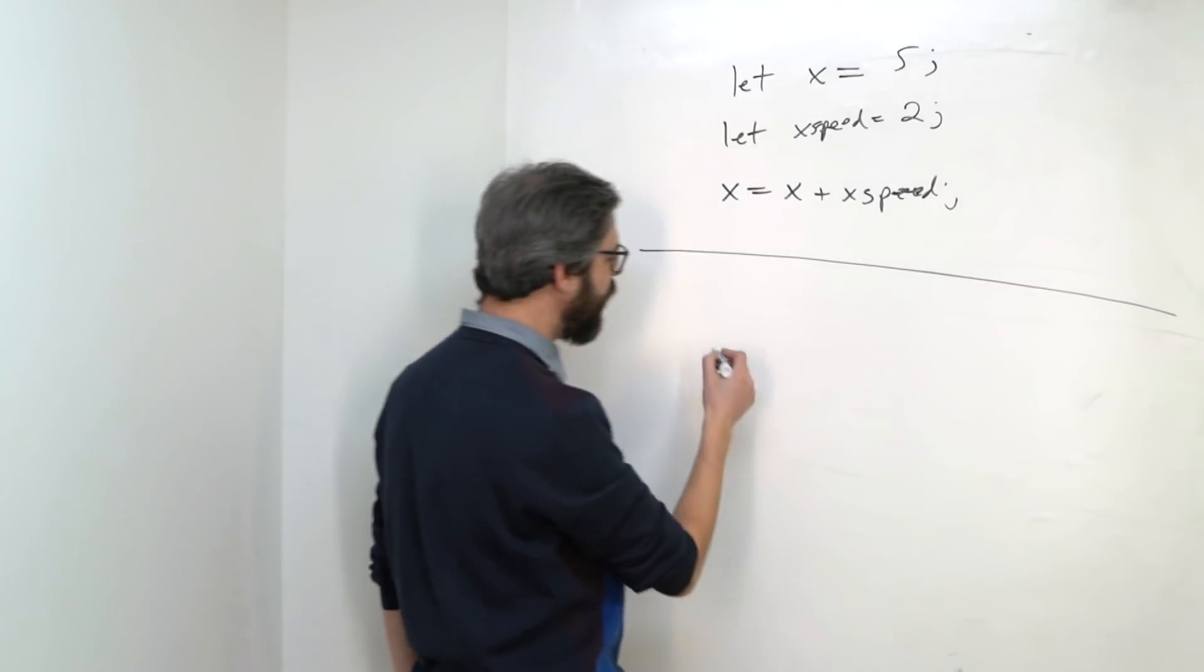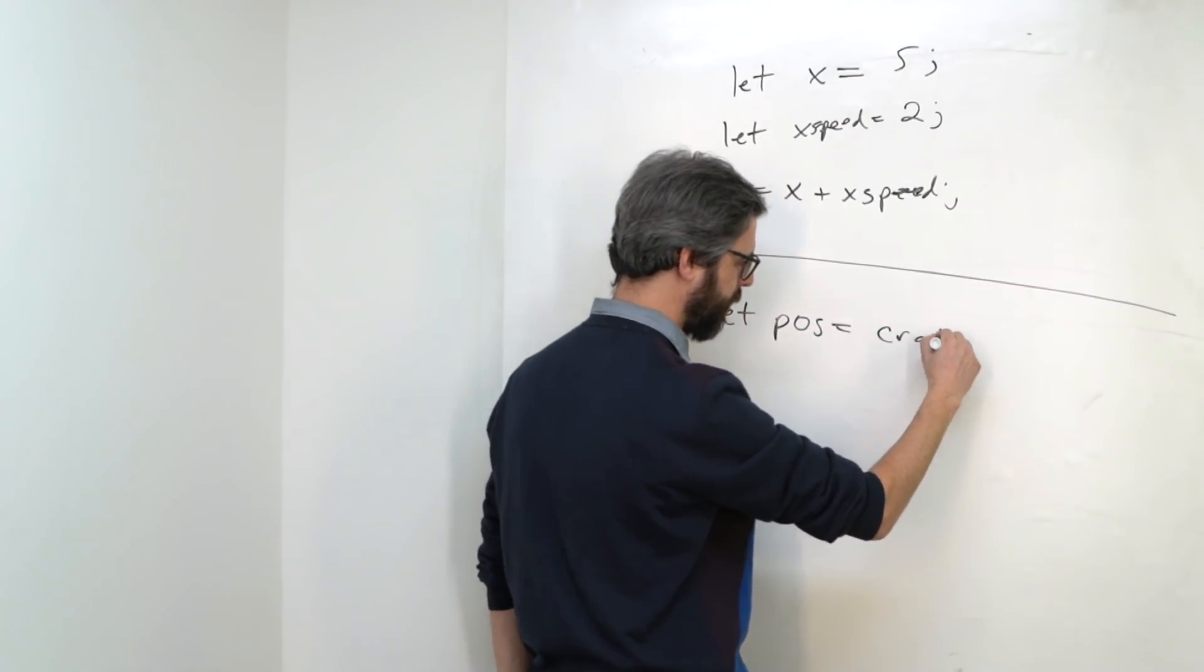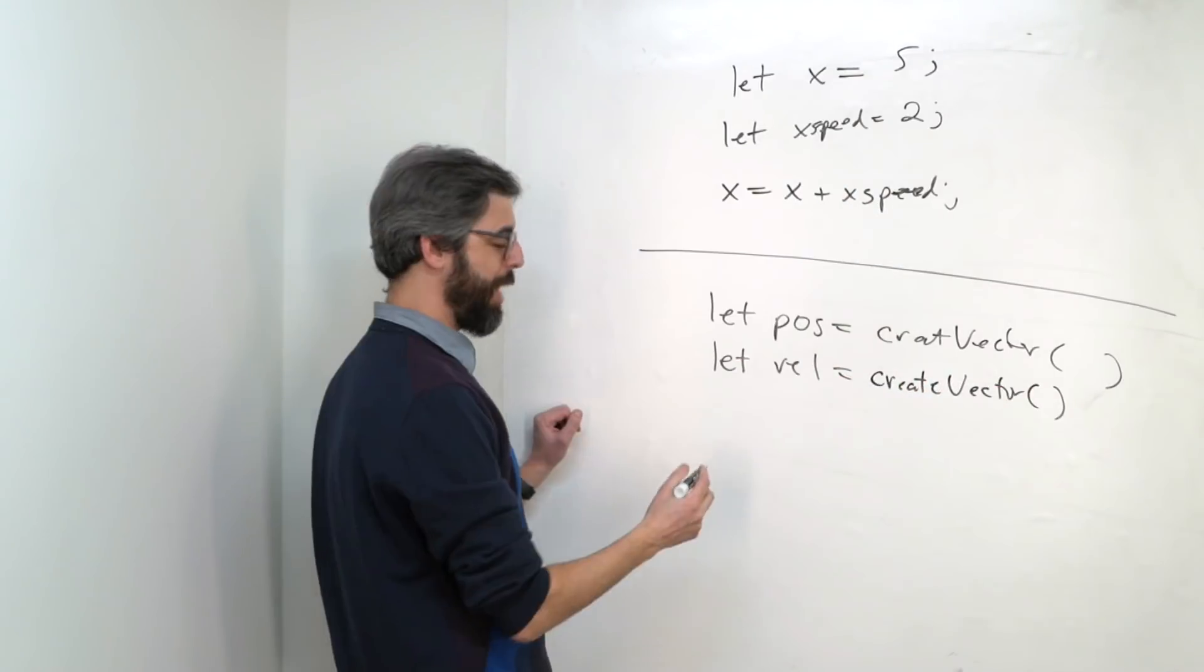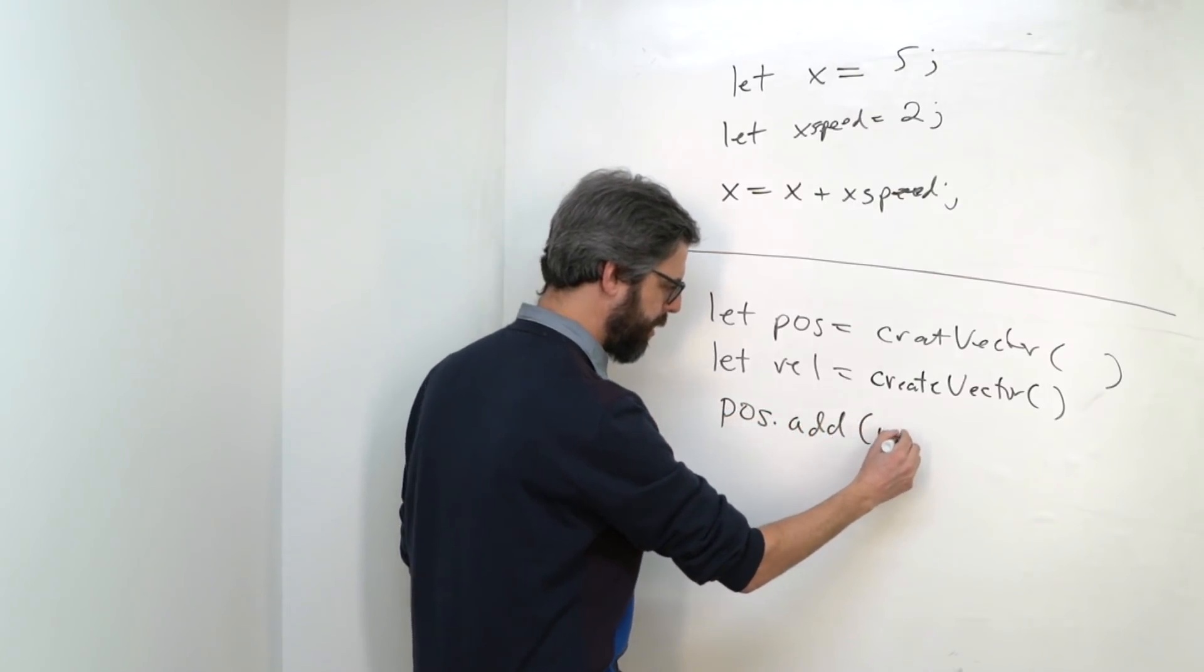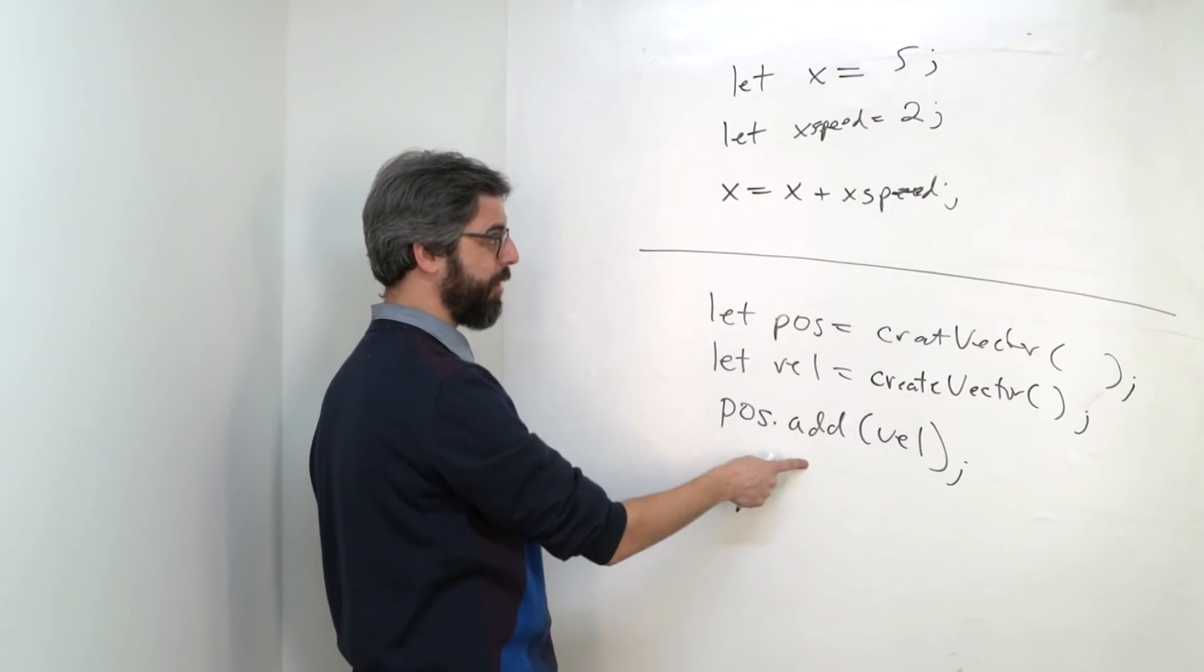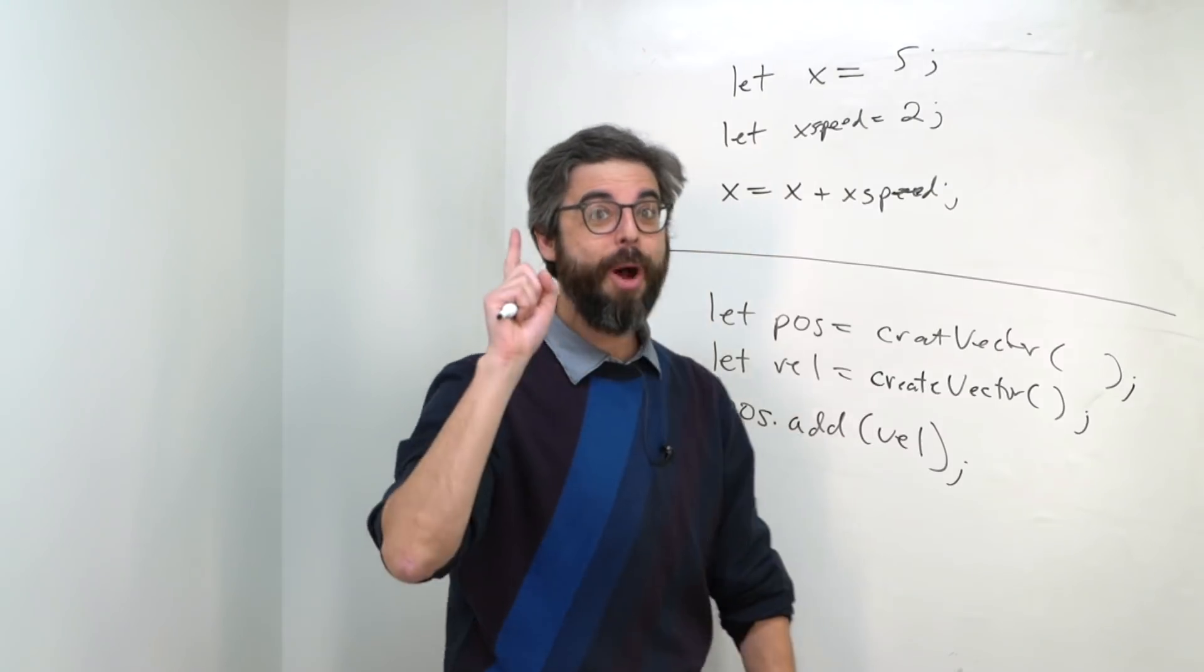We've now seen that the equivalent is if I have a position vector, and I have a velocity vector, I would say position dot add velocity. This is the equivalent of this, but with vectors. x changes by xSpeed, position changes by velocity.